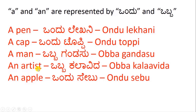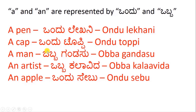An artist — Wabba kalavida. Wabba here is 'an,' kalavida is artist. An apple — Wundu sebu. Sebu is apple, wundu is 'an.' Generally, we use 'wabba' when referring to humans and 'wundu' when referring to animals or things.